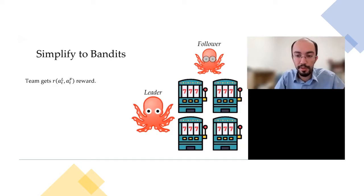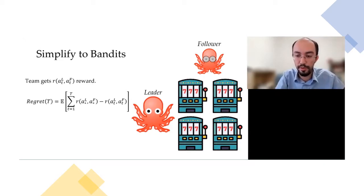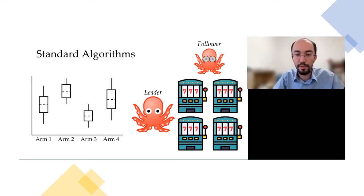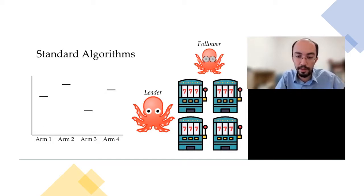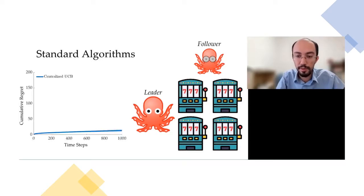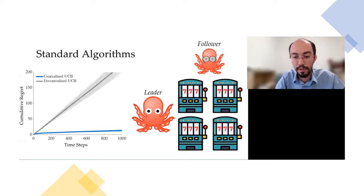The team gets a reward depending on the joint action, but agents may or may not observe it based on their partial observability. The goal is to minimize regret — the expected cumulative difference between optimal and actual plays. For multi-arm bandits there are standard algorithms like UCB, which keeps an upper confidence bound for the expected reward of each arm and takes the arm with the maximum upper confidence bound. It's proven to incur only logarithmically increasing regret in the single agent case. But if agents independently run UCB as if they have full control, they get stuck at suboptimal arms and incur linearly increasing regret.